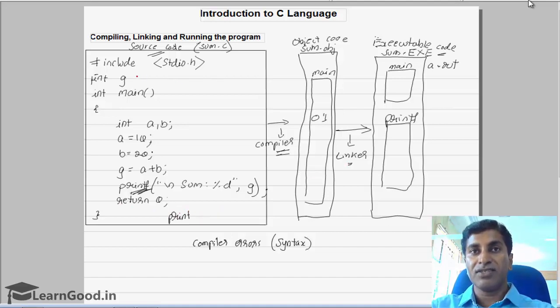It will search whether the print function is present or not. If it doesn't find the print function in stdio.h, the linker will fire an error. Such errors are called linker errors. You will get linker errors when you misspell the function names.